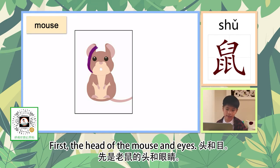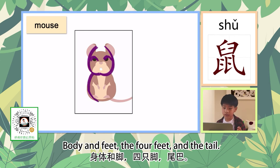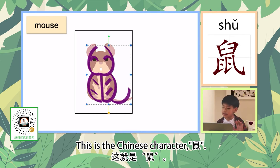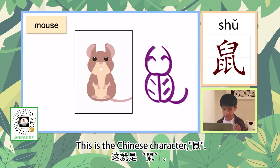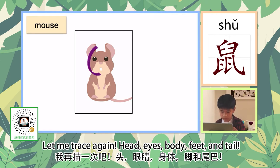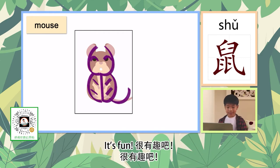Let's go directly into the tracing session. First, the head of the mouse and eyes. Body and feet. The forefeet and the tail. This is the Chinese character — 鼠. Let me trace again: head, eyes, body, feet, and tail. It's fun.